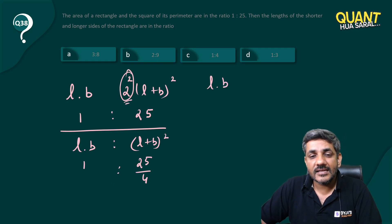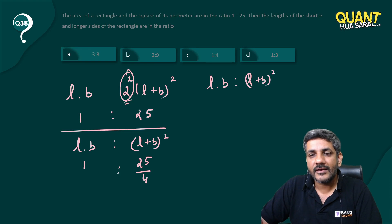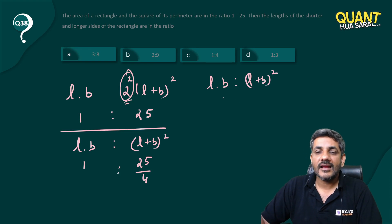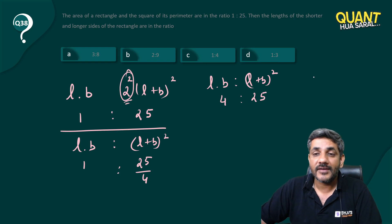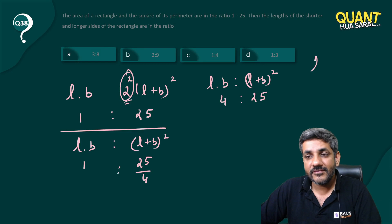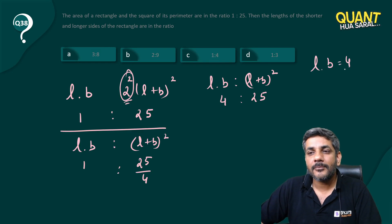So in other words, l times b to (l plus b) squared are in a ratio of 4 is to 25. And when (l plus b) squared is 25, then l plus b is 5.